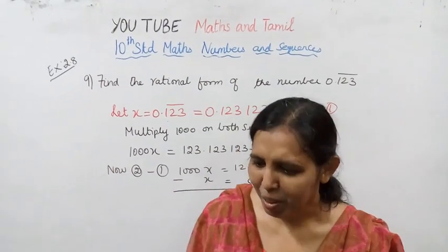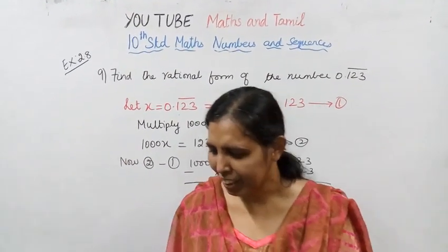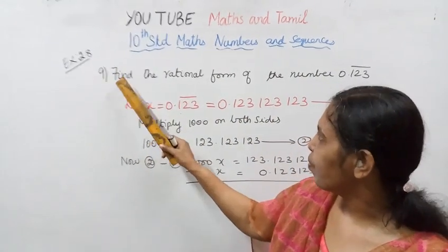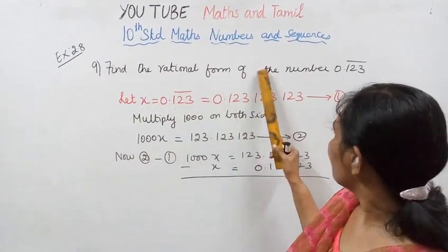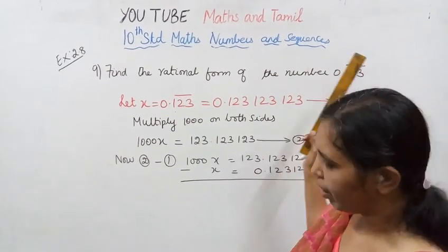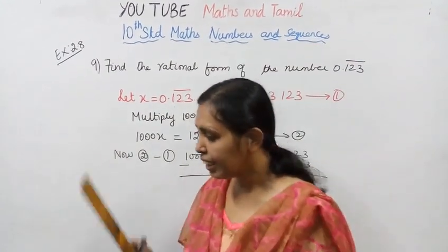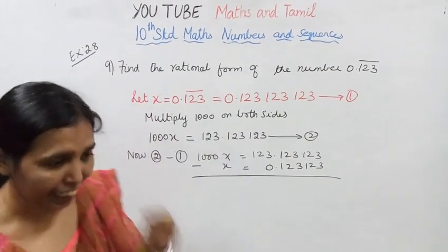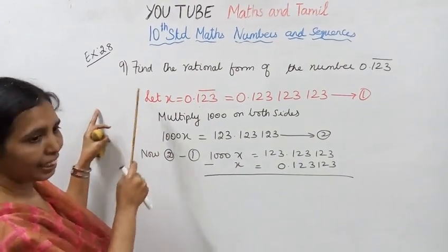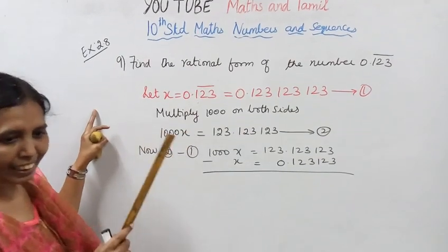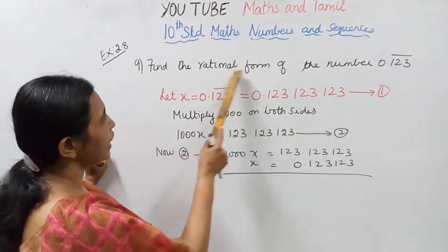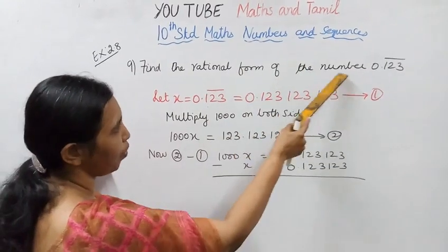Hello students, welcome to Vax and Tamil channel. Exercise 2.1 for 9th standard exam. Find the rational form of the number 0.123 repeating. This is the second exercise — find the rational form of the number.